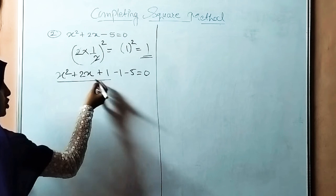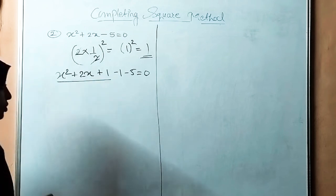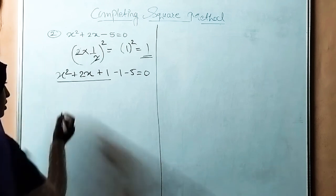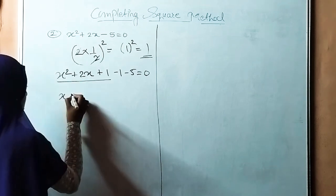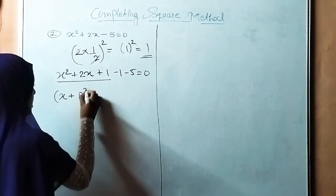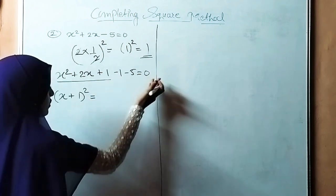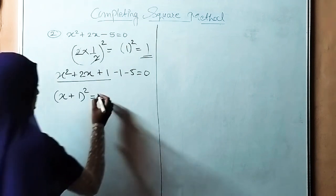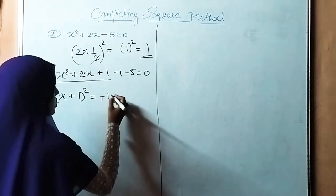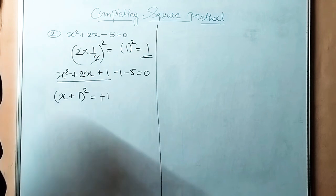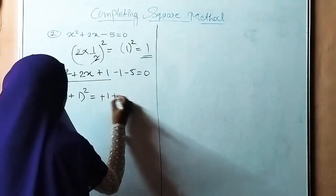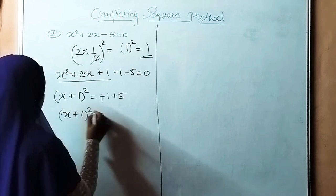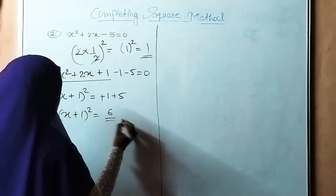Looking at the terms in the bracket, x square plus 2x plus 1 equals x plus 1 bracket square. Since we have a positive sign, x plus 1 bracket square equals 6, after shifting minus 1 to the right side, giving minus 1 plus 5 equals plus 6. So x plus 1 bracket square is equals to 6.